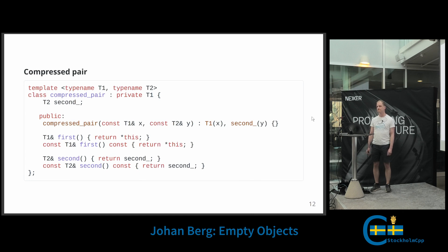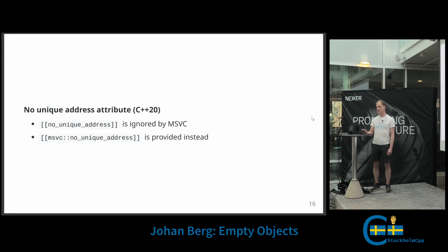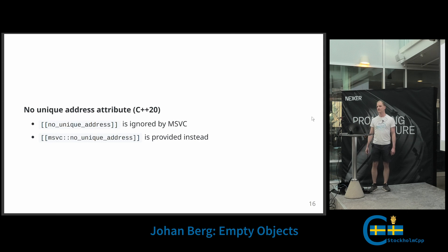Do you know if there's a compile flag for MSVC to force it to recognize the standard attributes, or do you still have to use a define or something to expand it to the MSVC version? The question is: is there a flag for MSVC to recognize the new no_unique_address? And no, there's not — you have to use if-defined to do it.